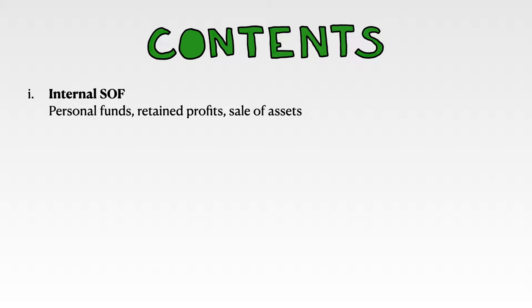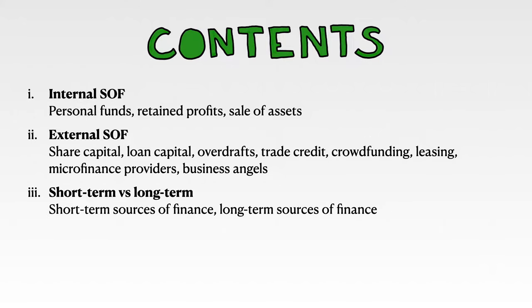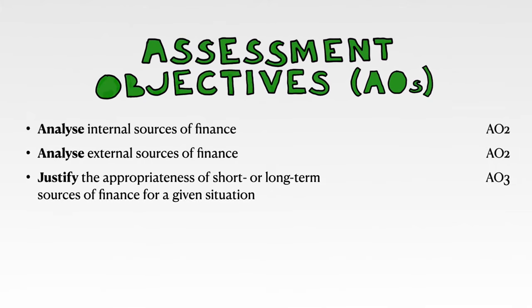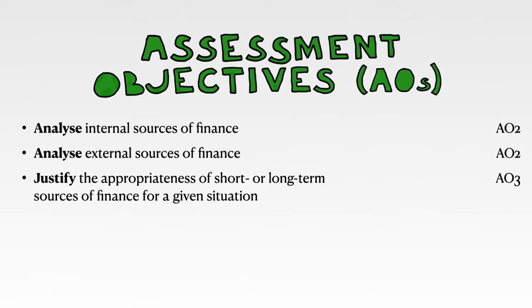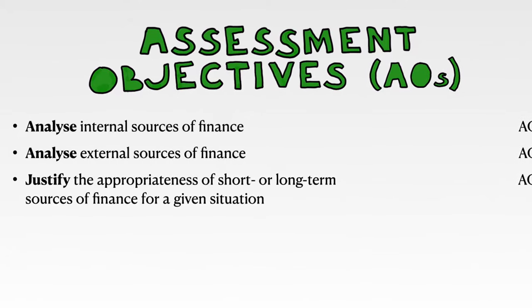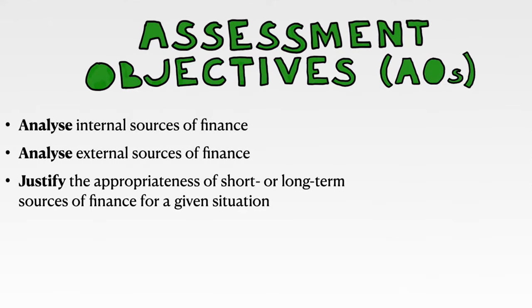There are three parts in this class: internal sources of finance, external sources of finance, and short-term and long-term sources of finance. We have three assessment objectives that correspond to these three parts: to analyze internal sources of finance, to analyze external sources of finance, and to justify the appropriateness of short-term or long-term sources of finance for a given situation.